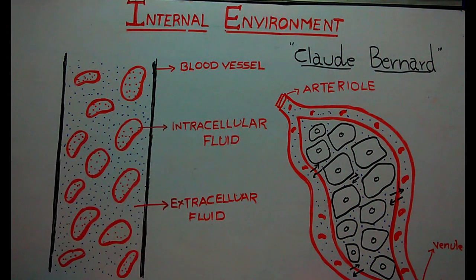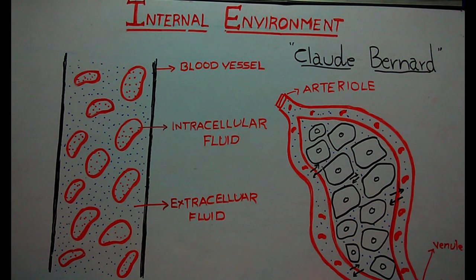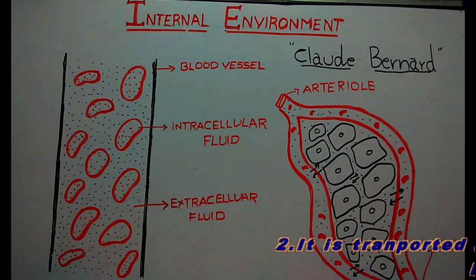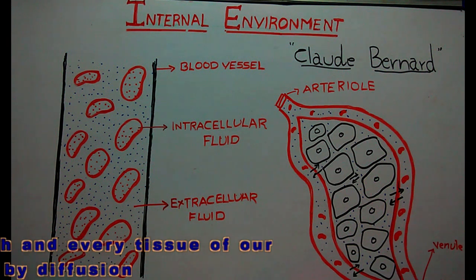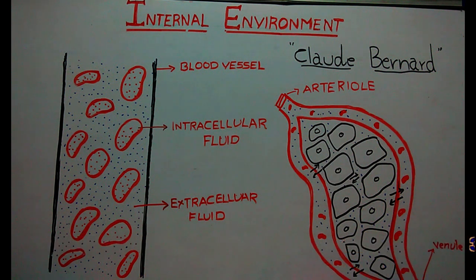I have represented the extracellular fluid with blue dots and intracellular fluid with red dots. This extracellular fluid has some properties: first, it is in constant movement throughout the body; second, this constant movement is possible because it is transported rapidly in circulating blood.